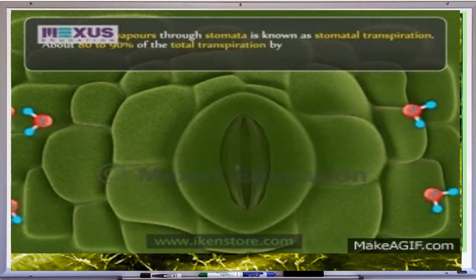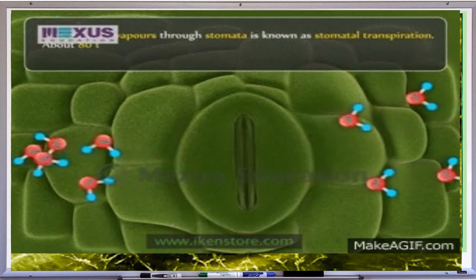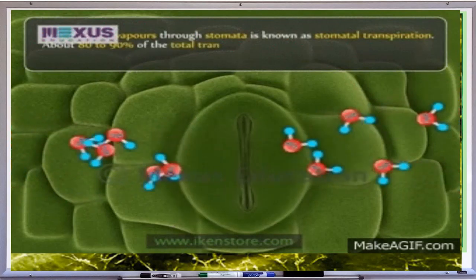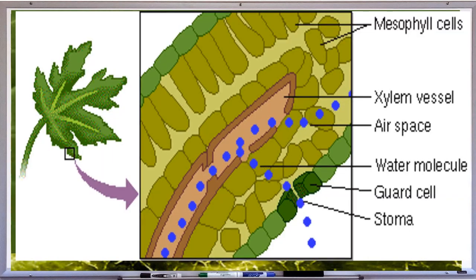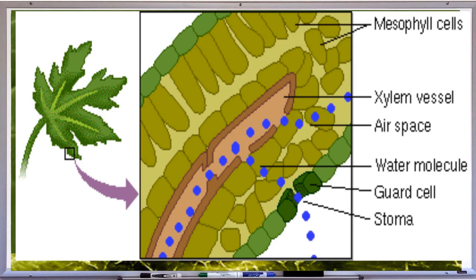When water evaporates through the open stomata, the water concentration gets lowered in the mesophyll cells. As a result, more water is drawn into the cells from the xylem of the leaves through the process called osmosis. As a result, water is lost from the leaves and pressure is created.